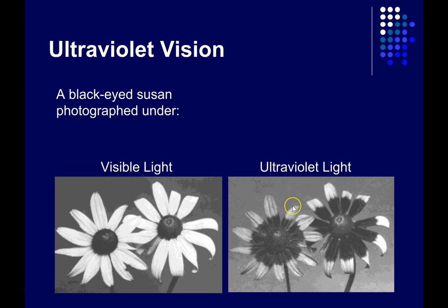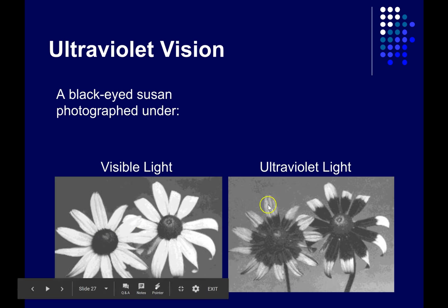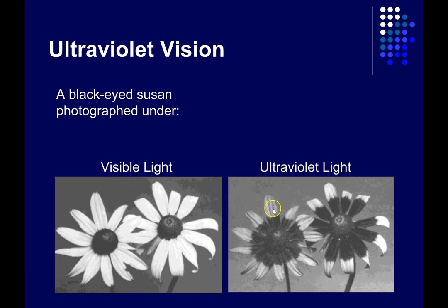You can see that the petals of the black-eyed Susan reflect more or less the same amount of visible light along their length. But if you look at the way they reflect ultraviolet light, you see that these wavelengths that our eyes are not sensitive to get reflected in different amounts along the length of the petals. The inner part of the petals absorbs a lot of ultraviolet light and the tips reflect a lot.